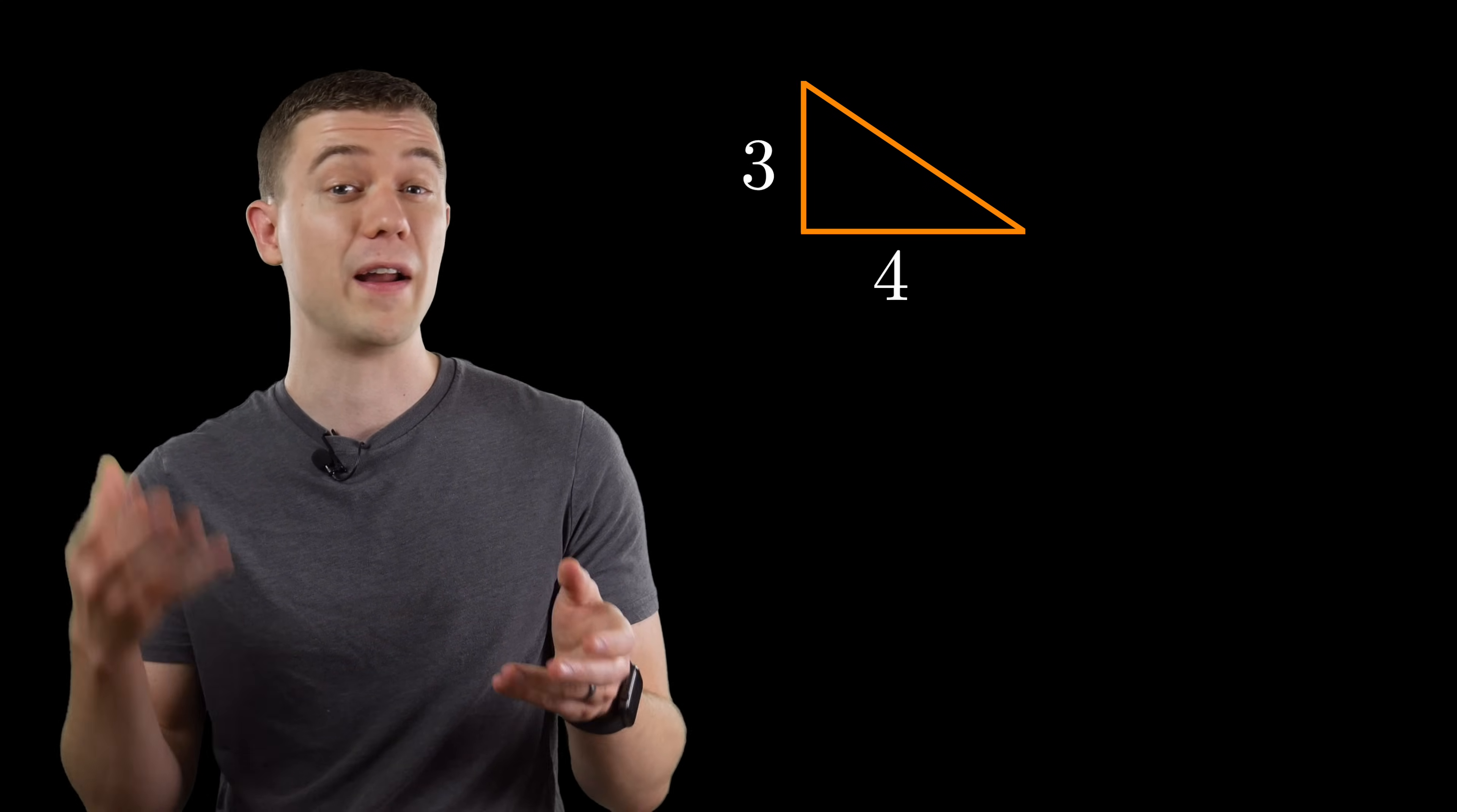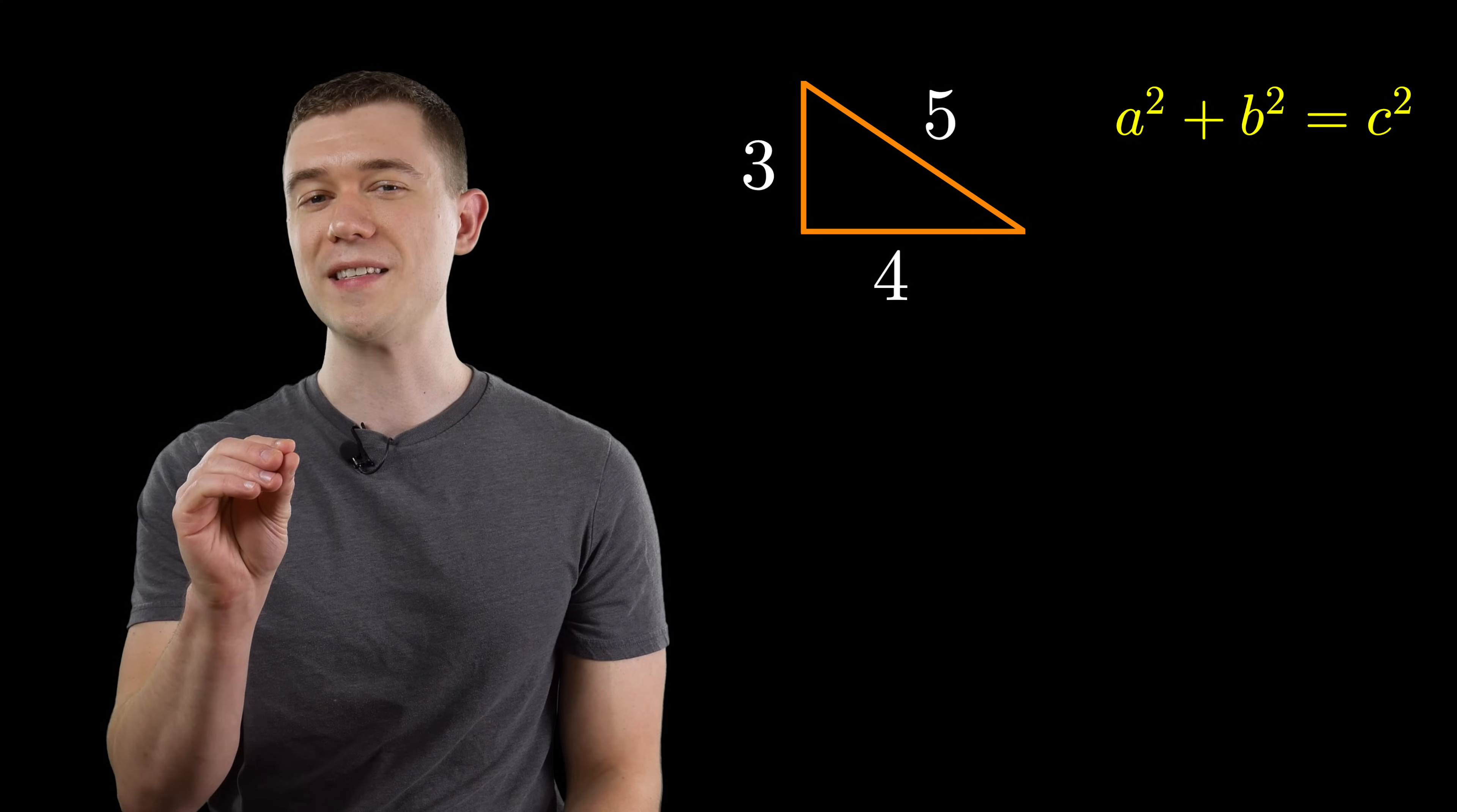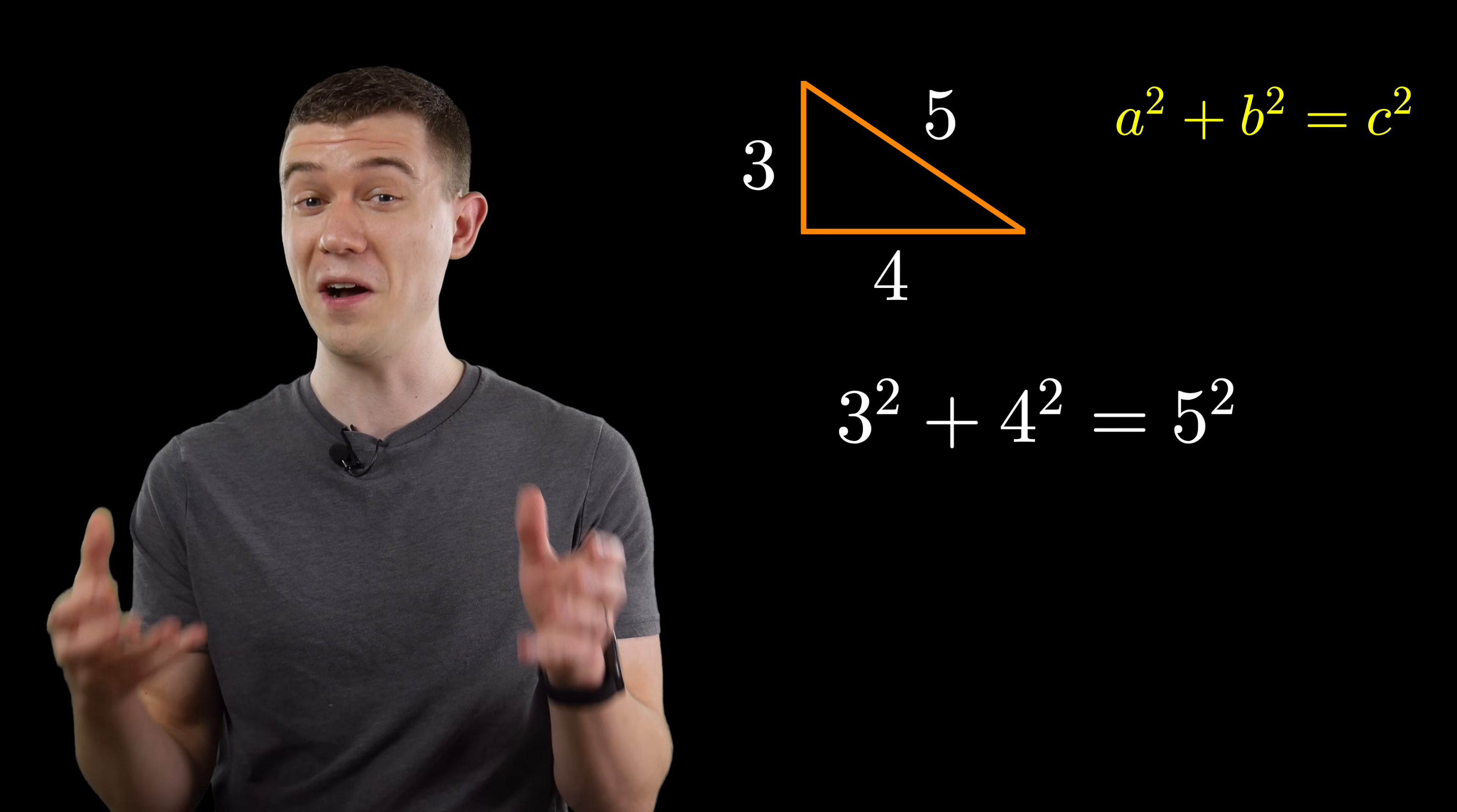You know 3, 4, 5 right triangles, legs of 3 and 4 and hypotenuse of 5 thanks to the Pythagorean theorem? That's pretty cool in itself. 3 squared plus 4 squared is 5 squared, but it goes beyond that.